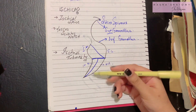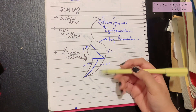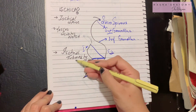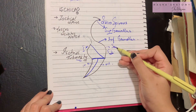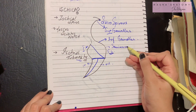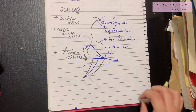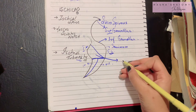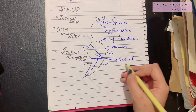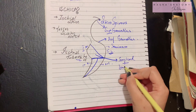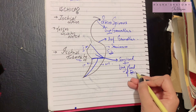The superolateral part of the ischial tuberosity gives attachment to the semimembranosus muscle of the lower limb. The inferomedial part gives attachment to the semitendinosus muscle plus the long head of biceps femoris — just like the upper limb has a biceps, the lower limb has one too, called biceps femoris.